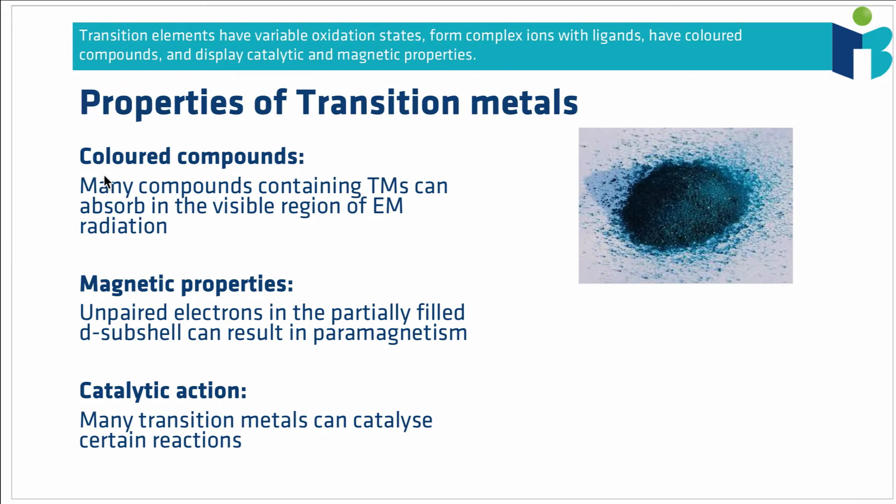We find that these complexes are often coloured. So this here is an example of a copper compound. You can see it blue in colour. Again, in a following video we'll explain how these colours arise from forming these complex ions.